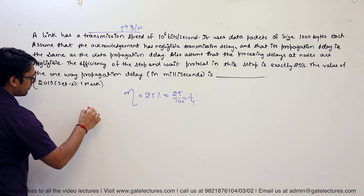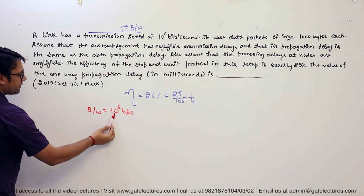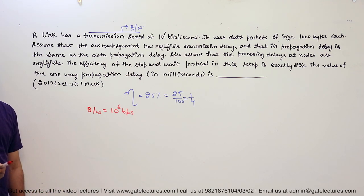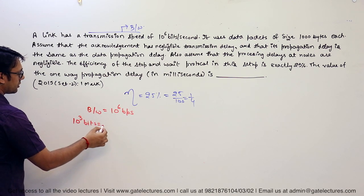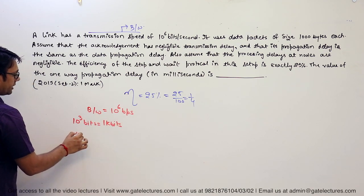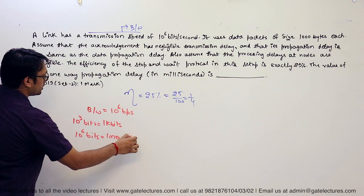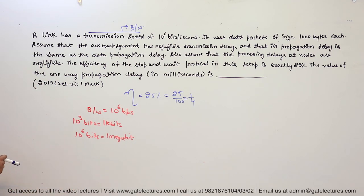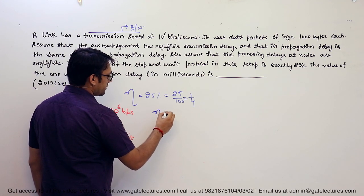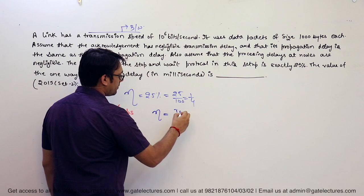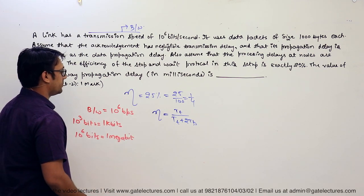The transmission speed, that is bandwidth, is given as 10 raised to power 6 bits per second. This is given in bits. We can note that 10 raised to power 3 bits is 1 kilobit, and 10 raised to power 6 bits is 1 megabit. Make sure I am writing bits here, not bytes.